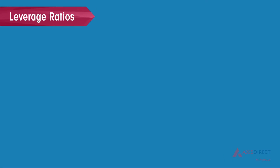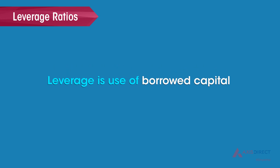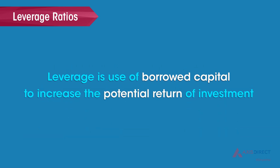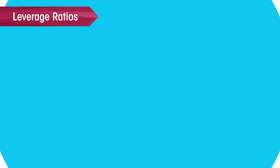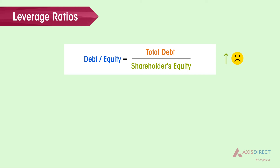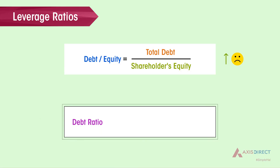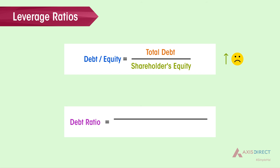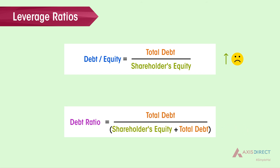Leverage is the use of borrowed capital to increase the potential return of investments. Debt-Equity Ratio: this ratio indicates how much debt the company has taken per every rupee of shareholders' money — a higher ratio indicates higher risk. Debt Ratio: it represents the percentage of total assets that are financed by debt — a higher ratio also indicates higher risk.